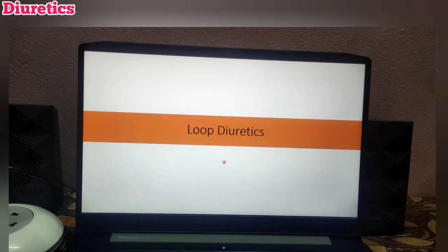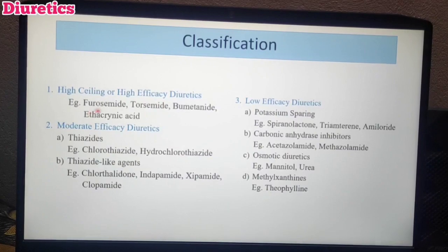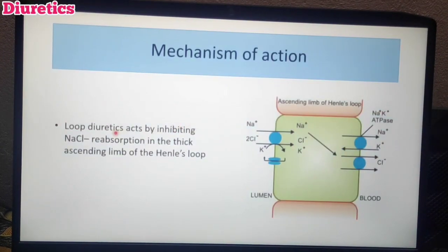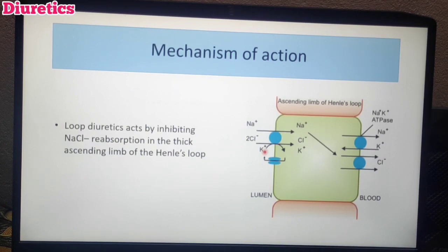Next: Loop Diuretics. We will see the pharmacology of high ceiling diuretics, starting with loop diuretics. What is the mechanism? These drugs act by inhibiting sodium chloride reabsorption in the loop of Henle. There is a cell in Henle's loop where sodium and chloride are reabsorbed. The drug blocks this reabsorption, so sodium and chloride remain in the urine, increasing urinary output.